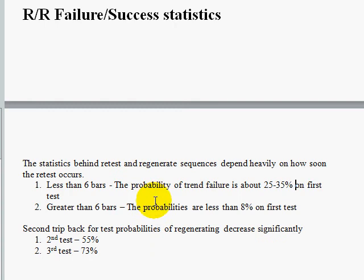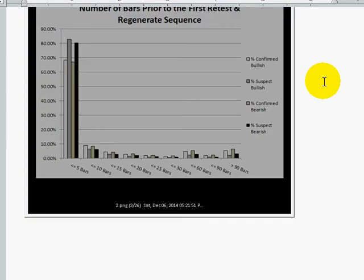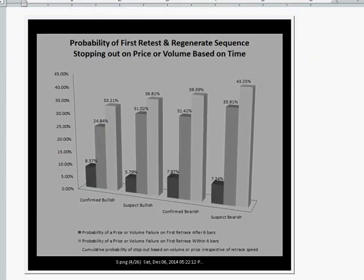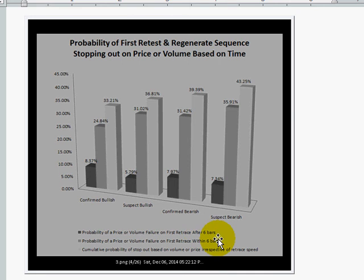Less than six bars — the probability is pretty high. If we look at the statistics graphically: on a first retest regenerate sequence, stopping out on price or volume based on time — if you come back, this is across the different types of trends — the probability of a price or volume failure on the first retrace after six bars is 8%, 5%, 8%, 7.25% depending on the type of trend. So in other words, if we go back to the chart on this particular breakout — let's use that weekly one because it's trying to do it right now — this was the breakout and we're on bar one, two, three, four.